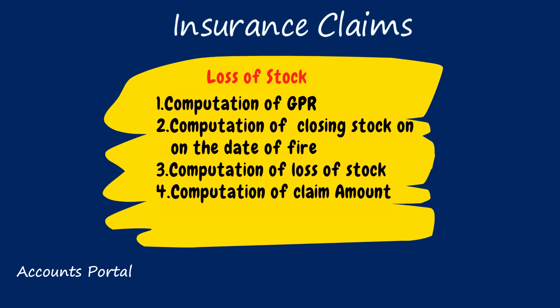Step 3: computation of loss of stock — closing stock on the date of fire minus salvage value. Step 4: computation of claim amount. If the average clause is applicable, claim amount is calculated proportionately: loss of stock multiplied by policy amount, divided by closing stock on the date of fire. If average clause is not applicable, claim amount is loss of stock or policy amount, whichever is lower.